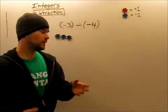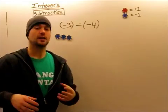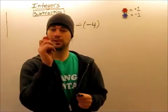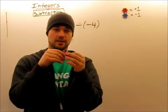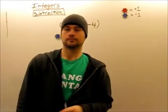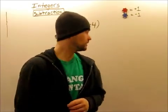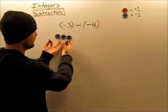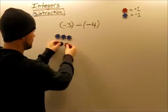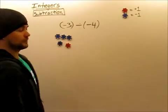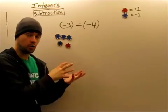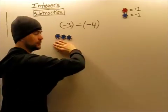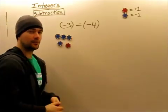So what we need to do is express the number negative three in a different way. Remember, negative one plus positive one are opposites — together they cancel out to zero. So what we can do is say that negative three can be written using five counters to show negative three. These ones cancel out to zero, so really I still have negative three.